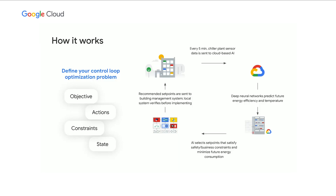Once you have that definition in place, you can go through this loop. Take an example where we're operating the chillers used to cool a data center. Every five minutes, we're collecting all the sensor data from the chiller plant and sending it up to the cloud-based AI. In the cloud, we're running the data through deep neural networks that can predict the future energy efficiency and the temperatures from all the various set point combinations possible. The AI will pick the right set point combination that will minimize your energy usage while obeying as many of your safety and business constraints as possible. Finally, it will make those set point recommendations available to your local building management system, which can validate and verify them before choosing to implement them locally.